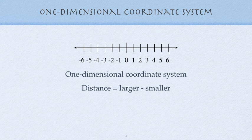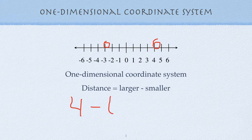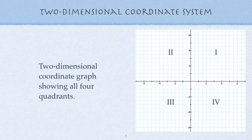So 4 take away negative 3 equals 7. So the distance between negative 3 and positive 4 is 7.